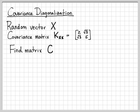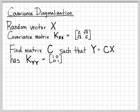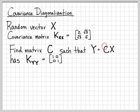What we're going to do is find another matrix C such that when we create a new random vector y — where y is equal to C times x — we end up with a random vector y whose covariance is the identity matrix. So the goal is to transform the random vector x into y via multiplication by C, so that y has a covariance matrix equal to the identity.